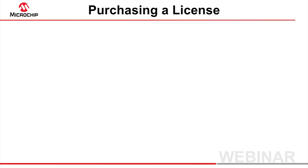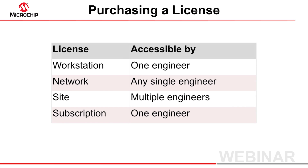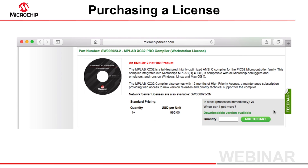If you would like unlimited access to the full compiler optimizations, you need to purchase a license and install the license file. Licenses are described in a separate webinar, but the remainder of this presentation will assume you are installing a workstation license — the most popular license type. Go to the Microchip Direct website. Make sure the license you select is for the correct compiler type — XC8, 16 or 32 — is for an actual compiler (not an HPA subscription), and is for the right edition — Standard or Pro — and the desired license type, for example a workstation license.